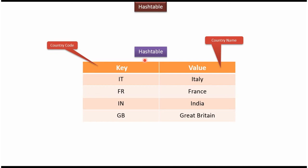Hash table is used to store key and value. Here key is country code and value is country name. For key IT corresponding value is Italy, for key FR corresponding value is France, for key IN corresponding value is India, for key GB corresponding value is Great Britain.